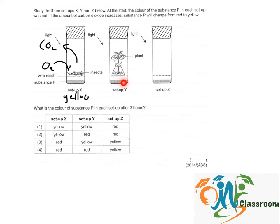In setup Y, there is a plant and the plant is given water, carbon dioxide and light. So the plant will take in carbon dioxide and produce oxygen. It will not increase the amount of carbon dioxide in the setup, so it should remain red.